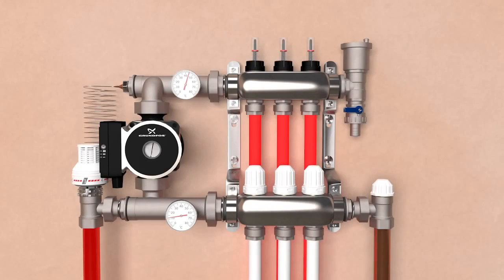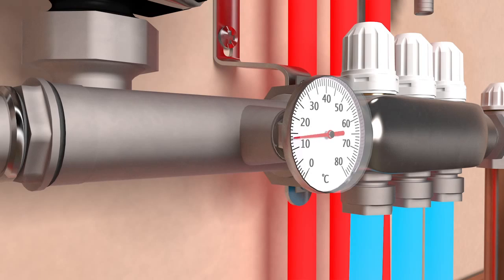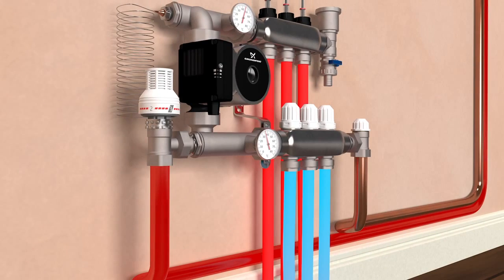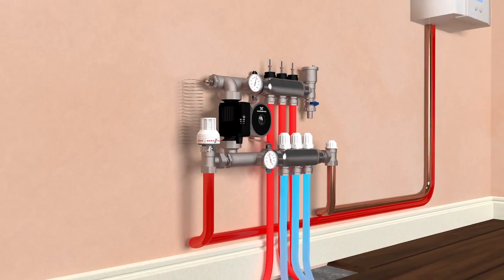Water returns to the manifold from the floor loops into the bottom return bar. The thermometer on this bar will give you an accurate reading of the water returning to your manifold. This is generally some 10 degrees less due to the heat being transferred from the pipes and radiated into your rooms.